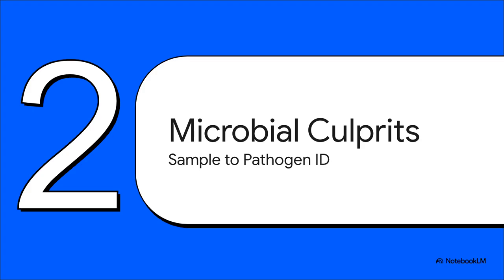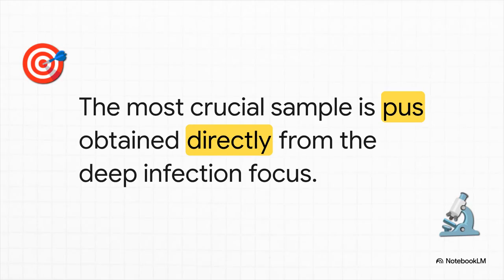Once you have a strong clinical suspicion, you have to figure out who the microbial culprits are. You can't effectively treat what you haven't identified, and for these infections getting the microbiology right is absolutely everything. Here is the single most important principle: forget about superficial swabs. A quick swab of the throat isn't going to tell you anything about what's growing deep inside a walled-off pocket of pus. The gold standard — and really the only reliable sample — is pus obtained directly from the abscess itself, usually during the surgical drainage procedure. Getting this sample right is what determines whether your targeted antibiotic therapy is going to work.